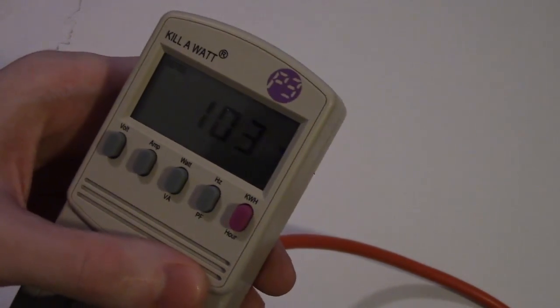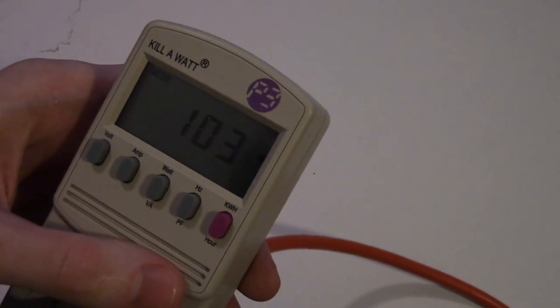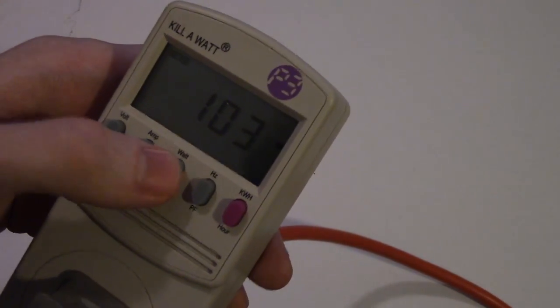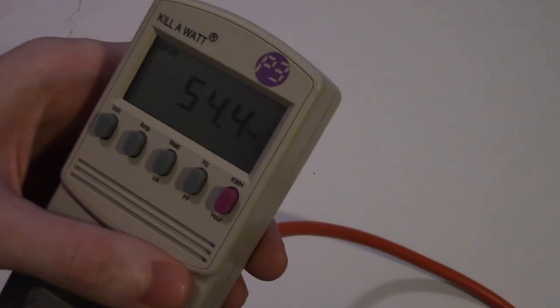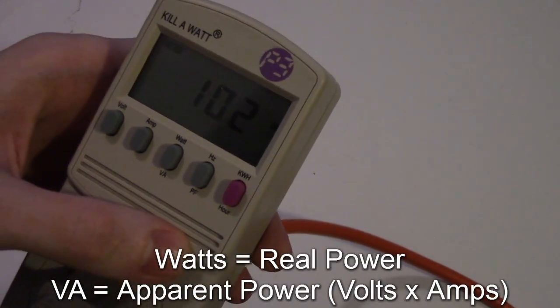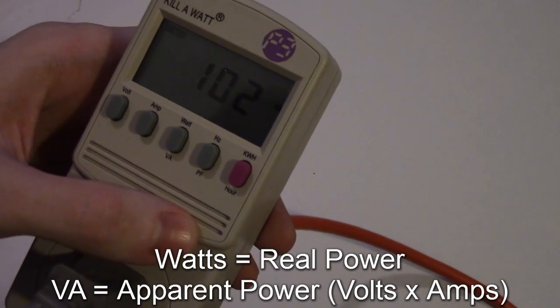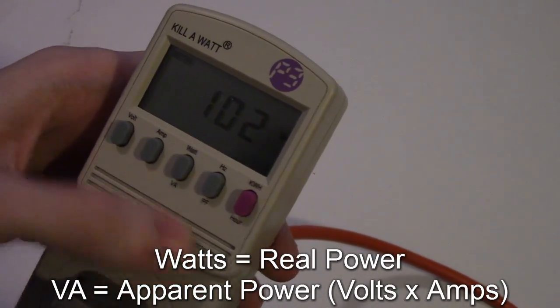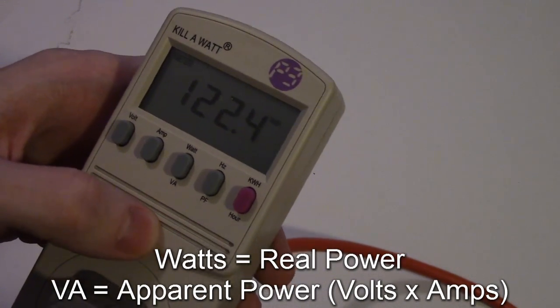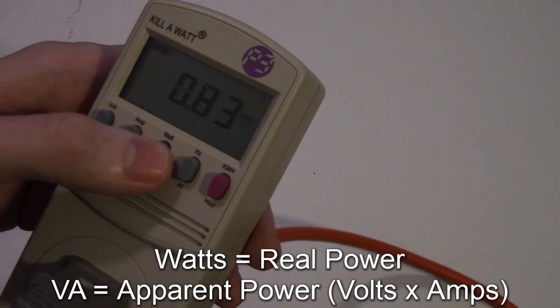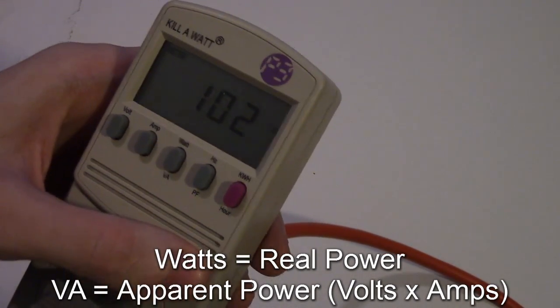I press that and I go to the volt amperes and it says 103 volt amperes. For most people, they're going to be looking at the watts here. They're not really going to be looking at volt amperes. But volt amperes, it's a calculation of multiplying the volts and the current together. It's multiplying 122.4 times 0.83, and that gives that VA rating.